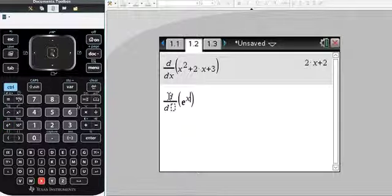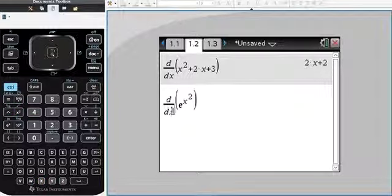Now the power was x squared, so we actually had x squared up in the power. We differentiated with respect to x, so now we can push enter.